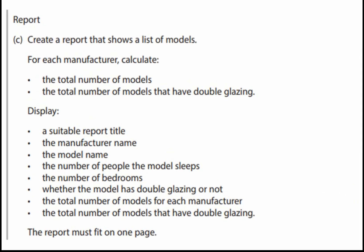We've got to create a report that shows a list of models for each manufacturer, calculate the total number of models, the total number of models that have double glazing. Display a suitable report title, the manufacturer name, the model name, the number of people the model sleeps, the number of bedrooms, whether the model has double glazing or not, the total number of models for each manufacturer, and the total number of models that have double glazing. The report must fit on one page.